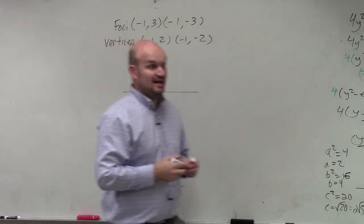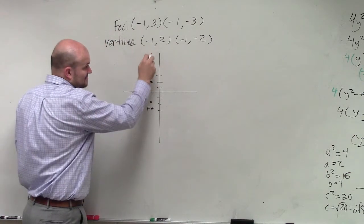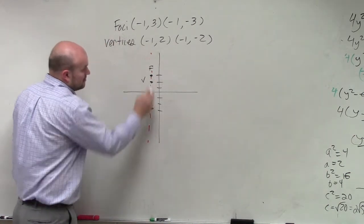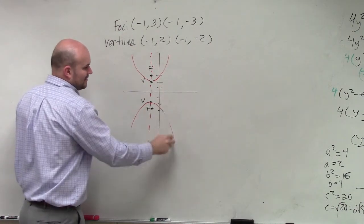OK, now this tells me a lot of pieces of information, right? It tells me, one, I have a vertical transverse axis. That's very important, right? So it's going to be looking something like that. It's going to open up and open down, right?